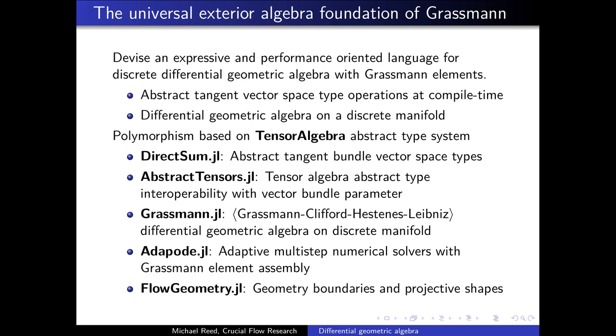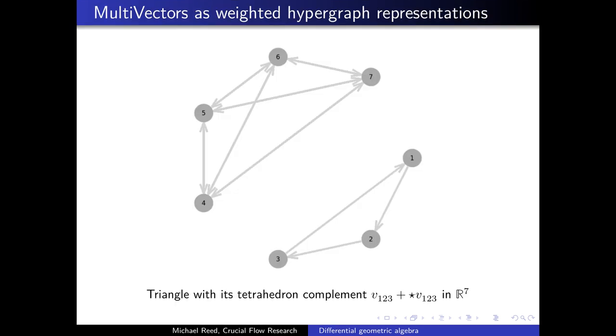The universal exterior algebra foundation of Grassman is used to devise an expressive and performance-oriented language for discrete differential geometric algebra with Grassman elements. This is based on the abstract tangent vector space type operation at compile time. This builds a differential geometric algebra on a discrete manifold. Thanks to the Julia language multiple dispatch, there is a polymorphism based on the tensor algebra abstract type system. It is insightful to view multi-vectors as weighted hypergraph representations.